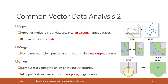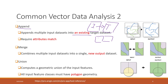For append: append can combine multiple data into an existing target dataset. For example, you have feature one and feature two — one will be the input and one will be the target, and append will add the input to that target. It requires that the attributes should match: the input and target should have a similar structure, similar attribute table, and also similar data types, otherwise you will have errors.